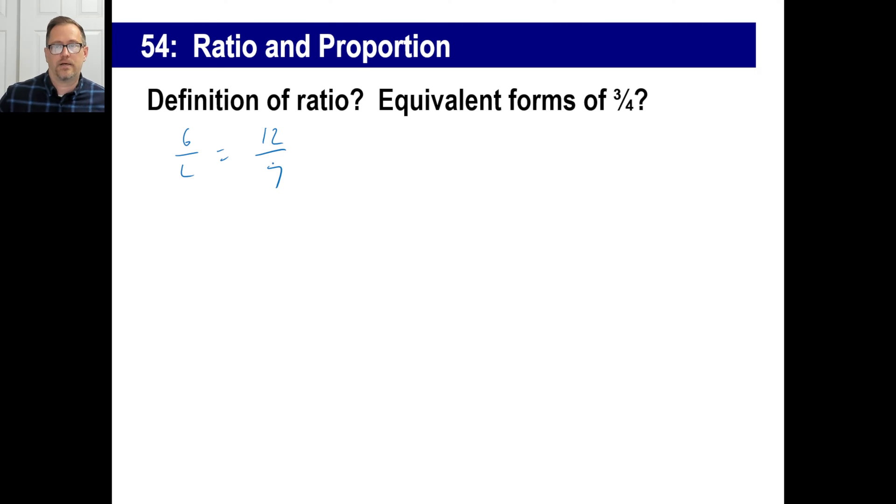But equivalent forms of, let's say, for example, 3 fourths. What's another fraction that means the same thing as 3 fourths? You could just multiply the top and the bottom by 2, right? It'd be 6 over 8. You can multiply the top and the bottom by 3, 9 over 12. Same thing. That's a ratio.